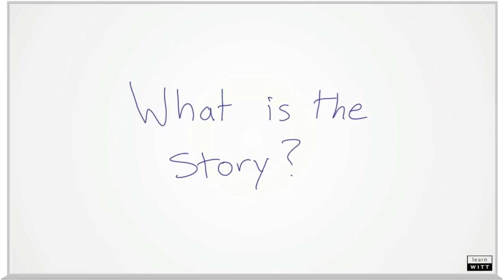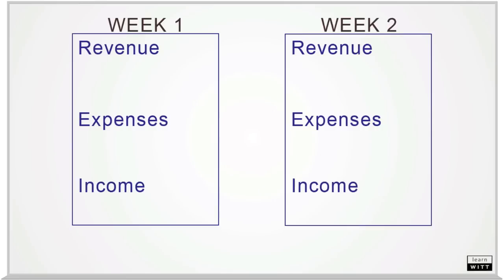What is the story of Jim's income? What would his income statement for each week look like? In week one, Jim received $0 in cash, and he spent $10 of cash on his expenses. His total for week one was negative $10.